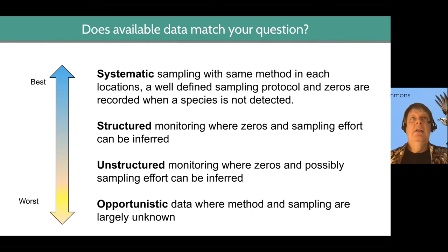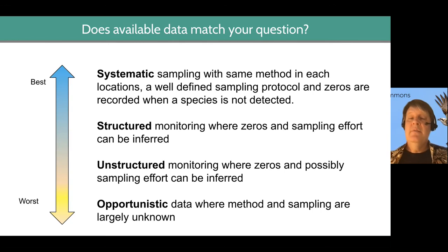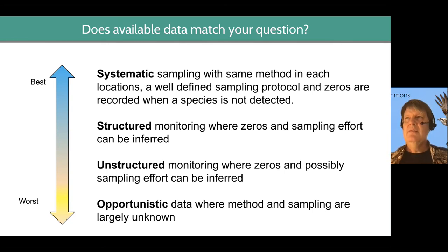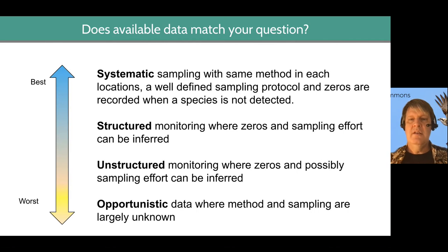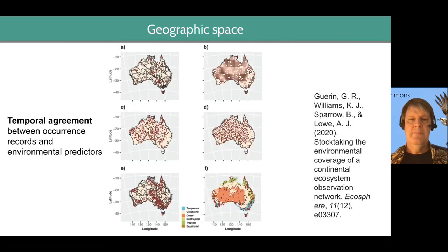So a lot of the modeling we do deals with unstructured or even opportunistic data that's available. And we're going to talk about some of the things that you can do in the first step of your modeling process — dealing with your occurrence data — to overcome some of those issues.